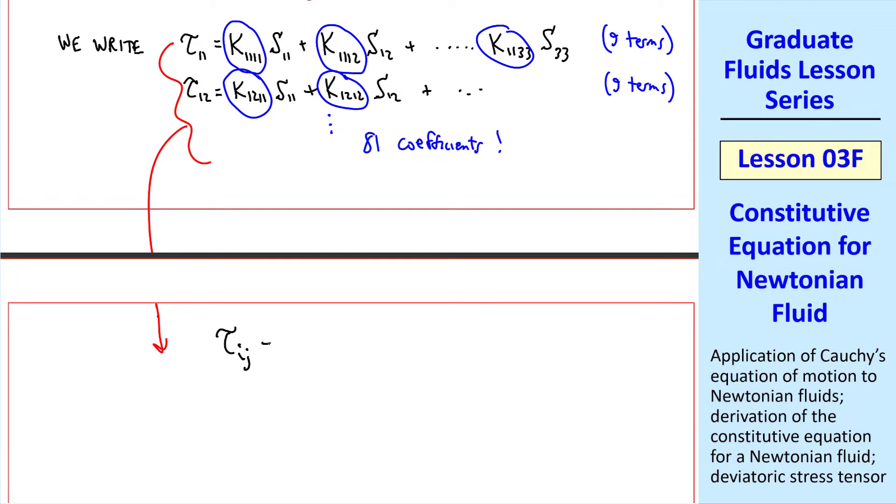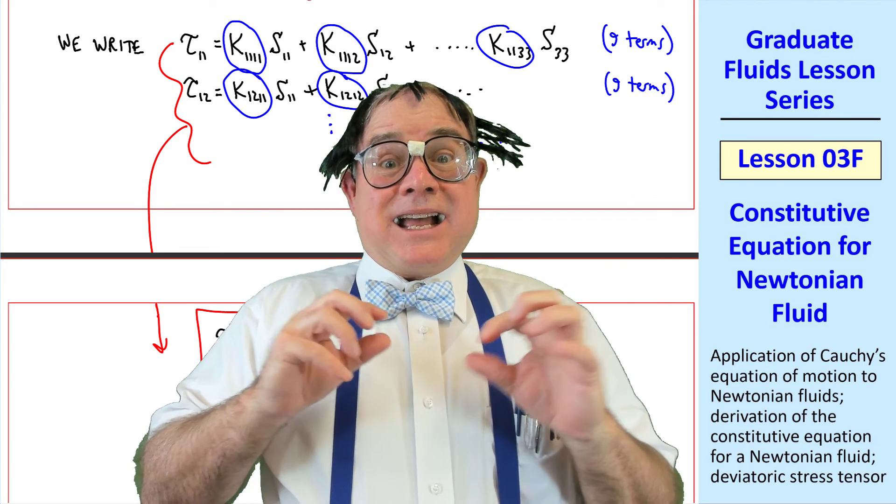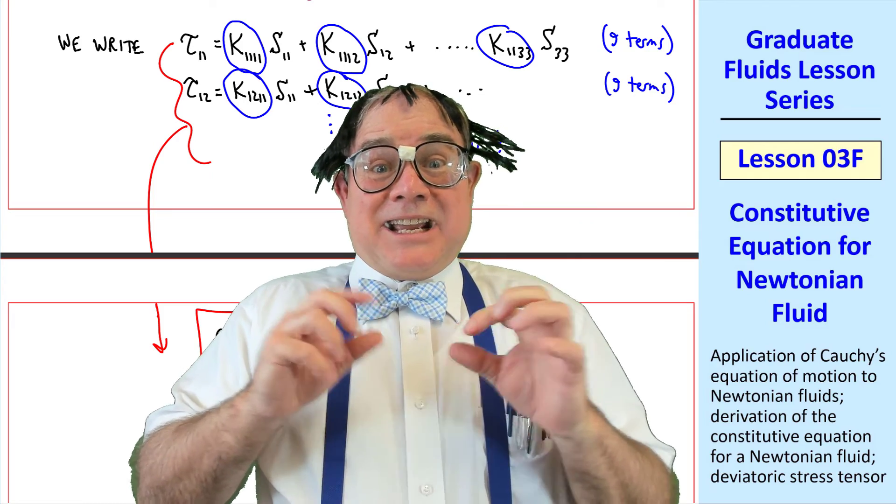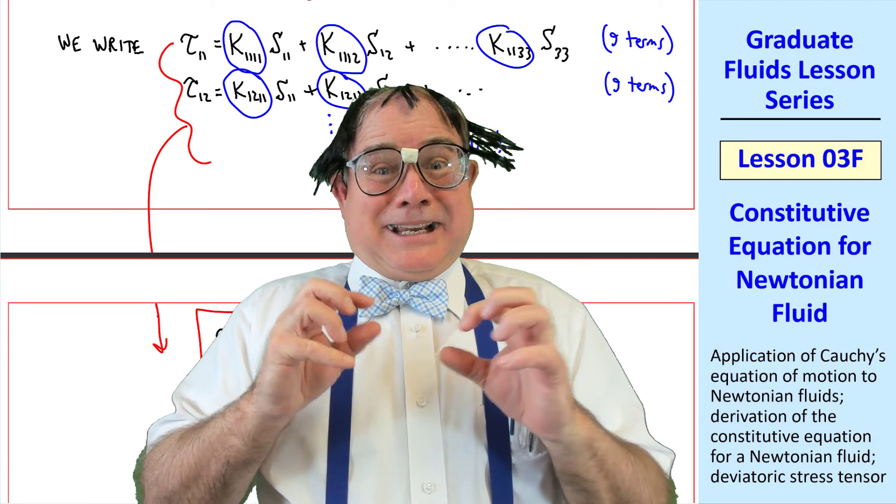We can rewrite this entire equation in one simple tensor notation equation, namely tauij is coefficient kijmn smn. This is the most general linear equation between tauij and sij, or in this case smn. The problem here is that this is a fourth-order tensor with 81 components. I had a hard enough time understanding second-order tensors, and now you're giving us fourth-order tensors.